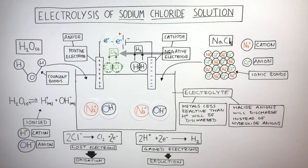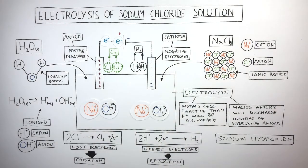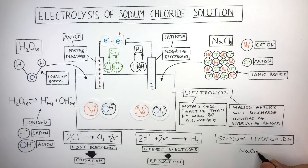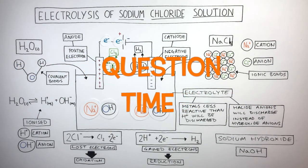Chlorine gas has formed at the anode and hydrogen gas has formed at the cathode. This leaves sodium hydroxide in the solution. Sodium hydroxide has a chemical formula of NaOH.